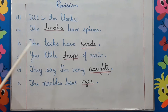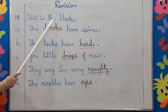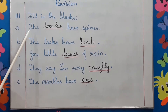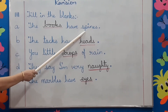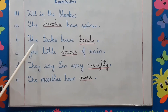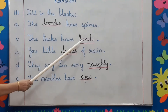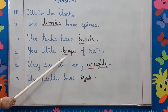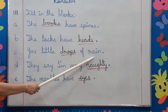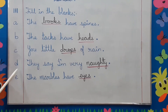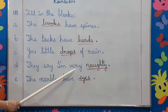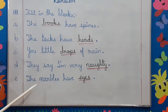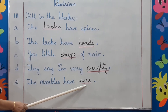Topic number three: fill in the blanks. A. The books have spines. B. The tats have heads. C. You little drops of rain. D. They say I am very naughty. E. The marbles have eyes.